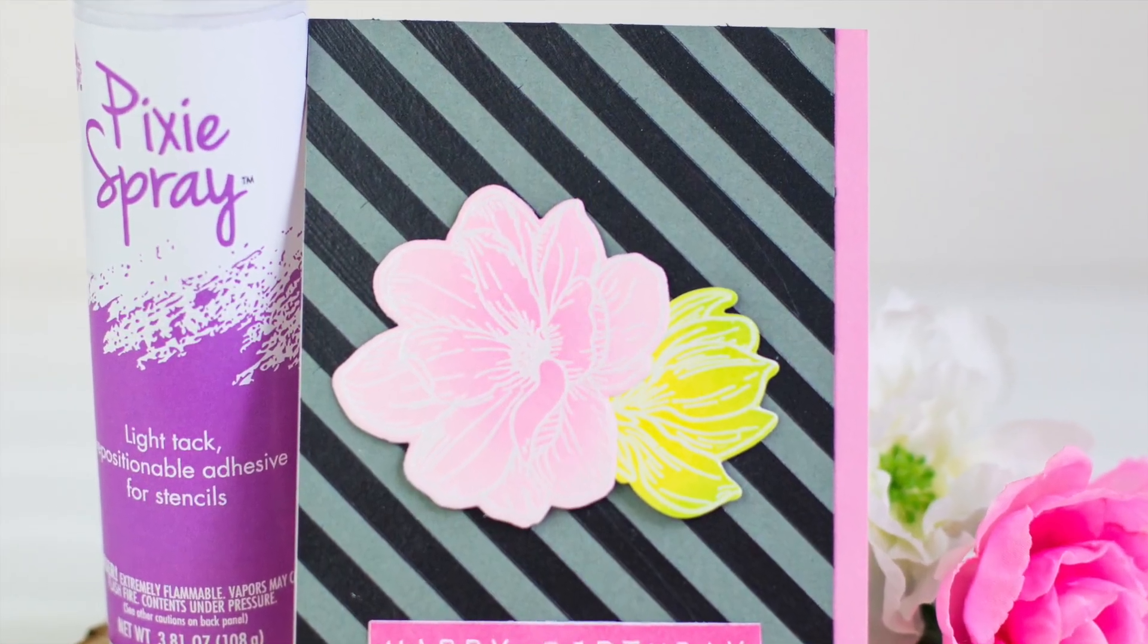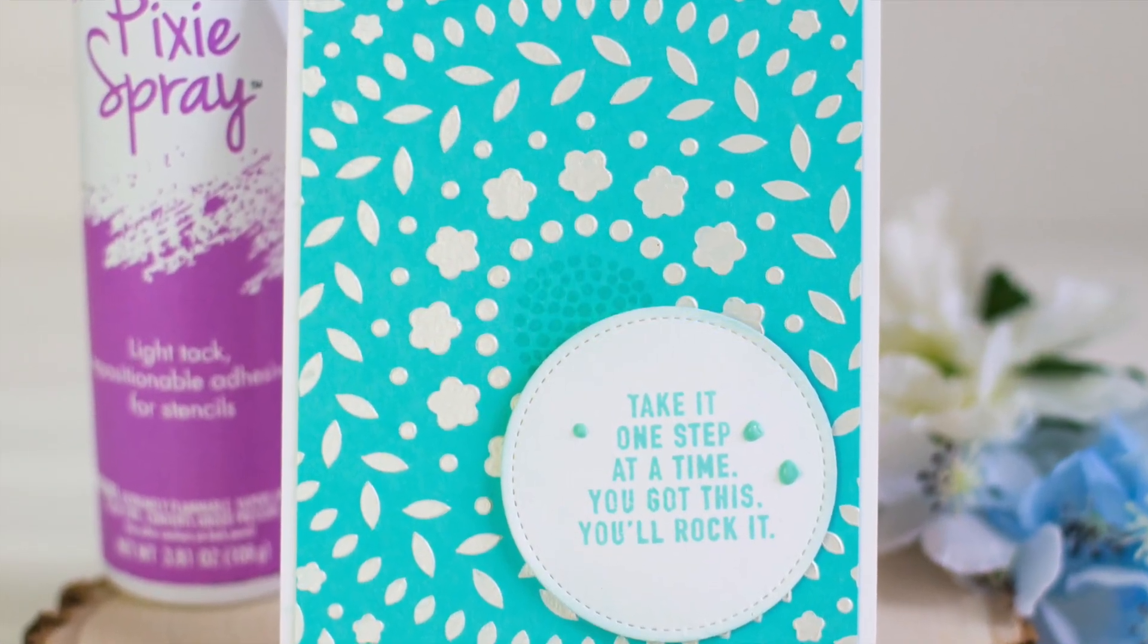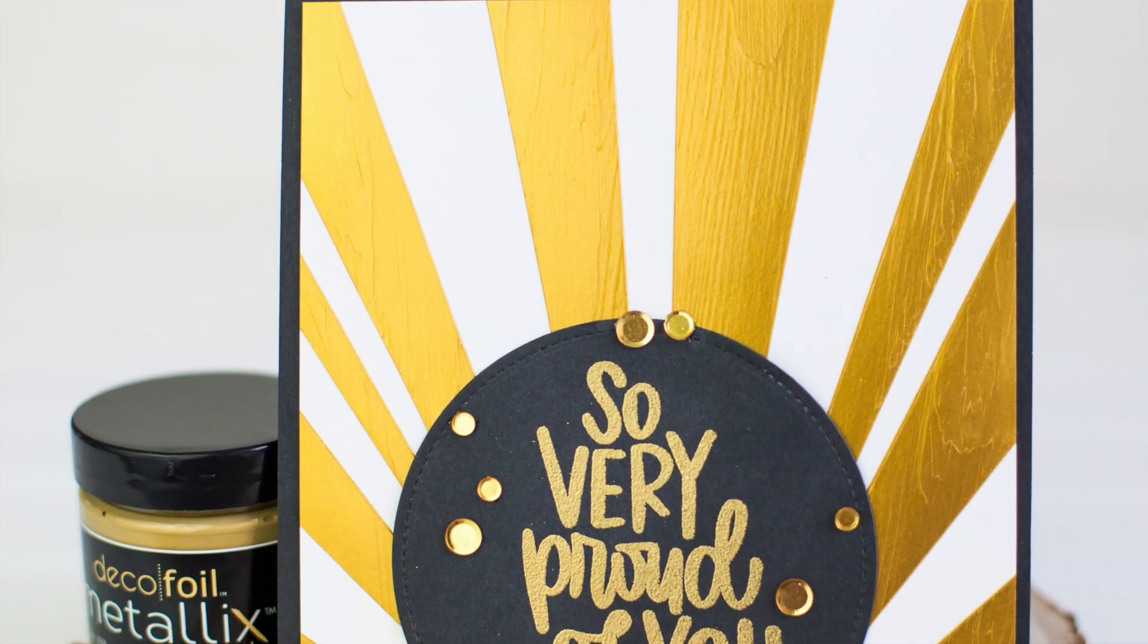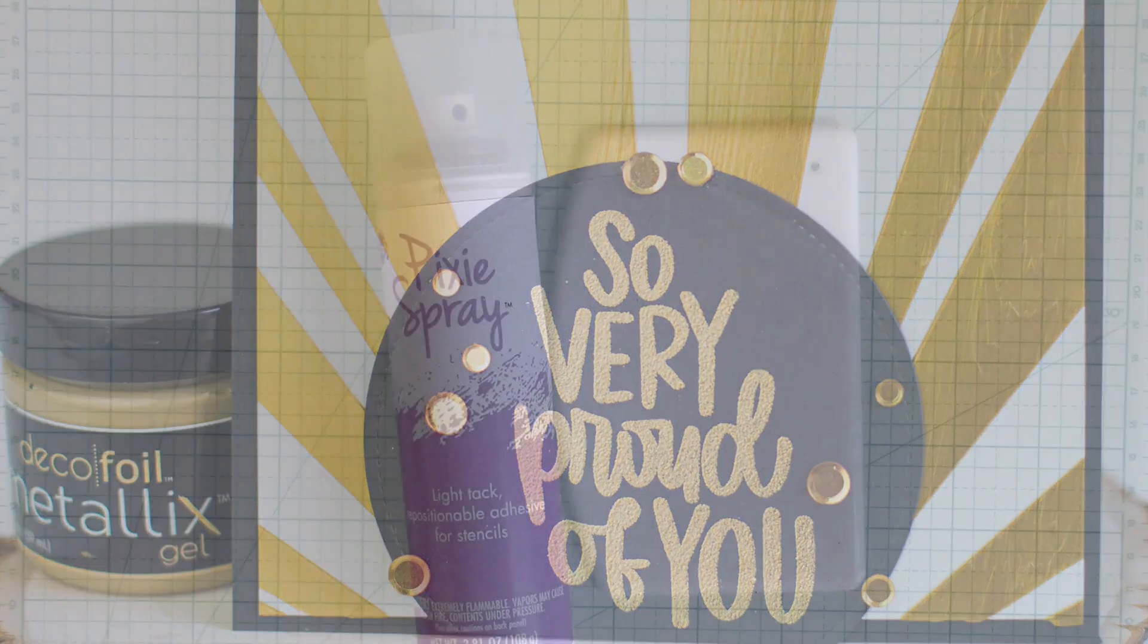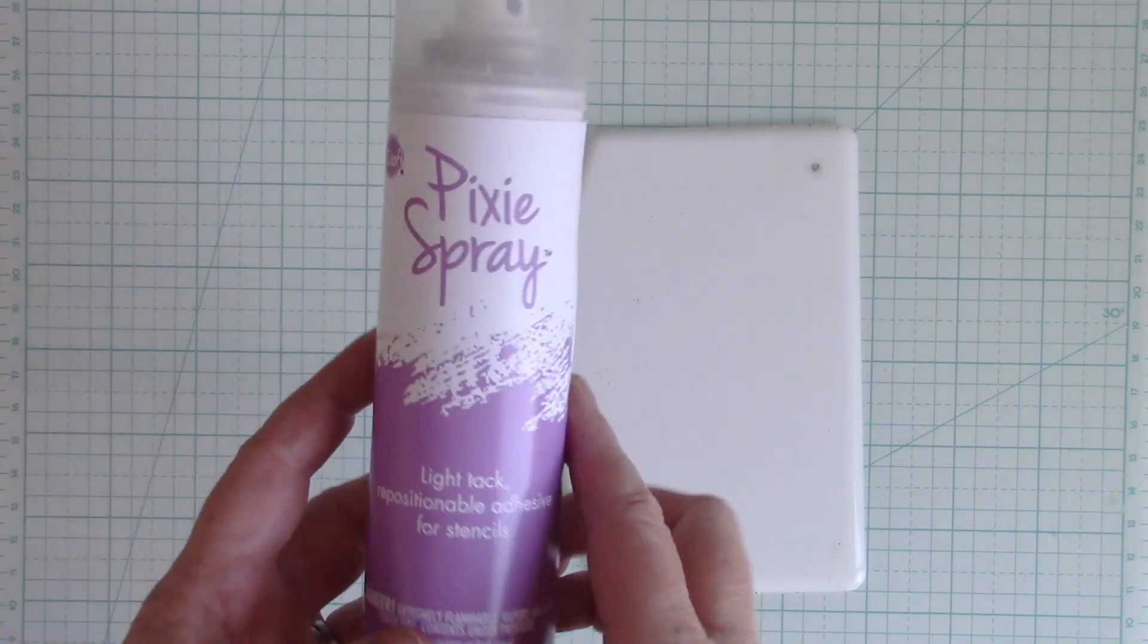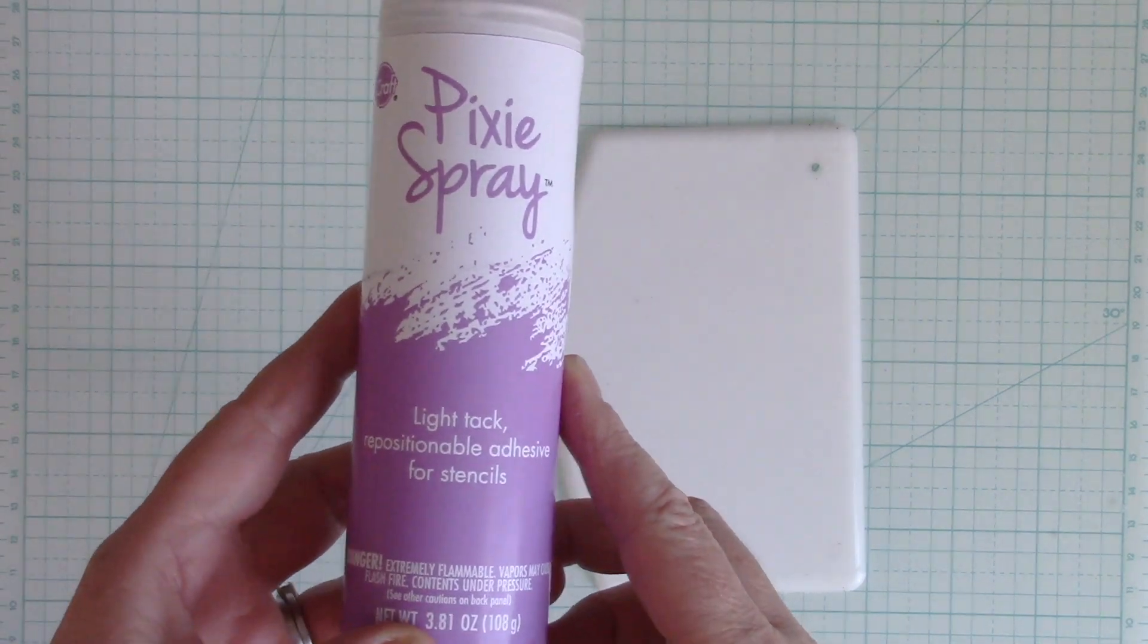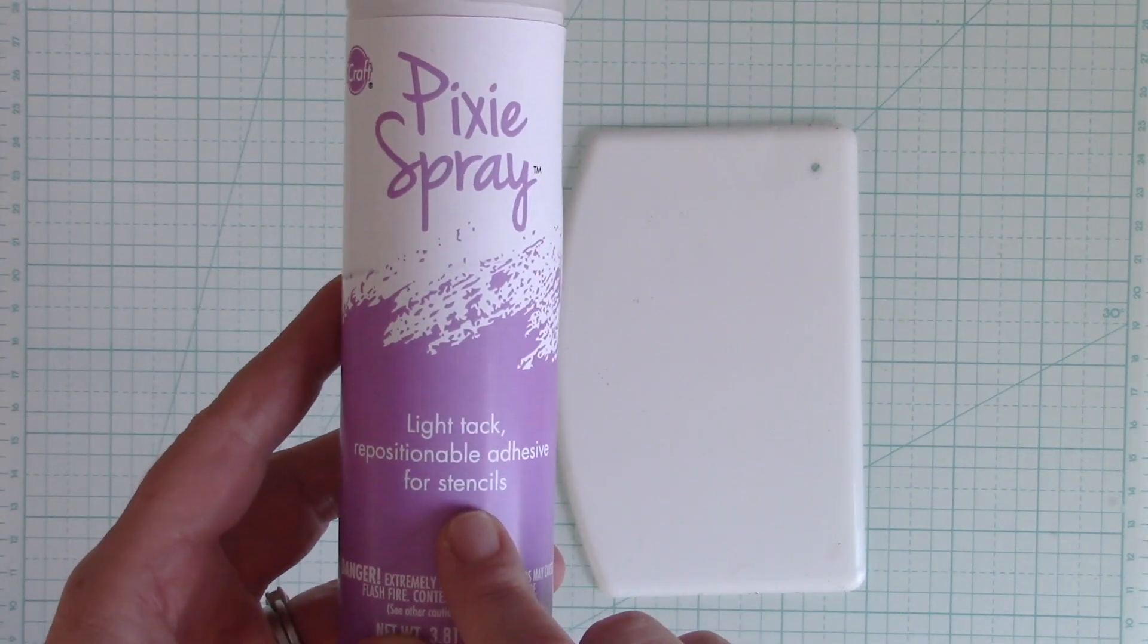They're all using the brand new ThermaWeb Pixi Spray, Stencil Pal, and Metallix Gels. These three things work really well together, but they can be used with other things as well. First I wanted to show you the Pixi Spray. It's a light tack repositionable adhesive, perfect for stencils.